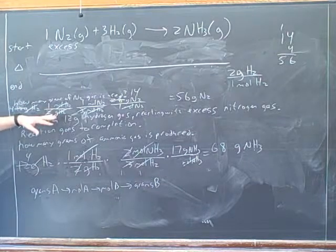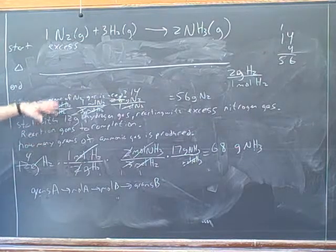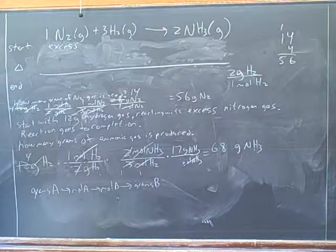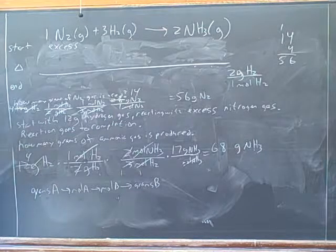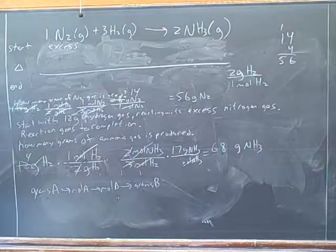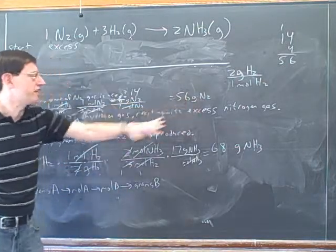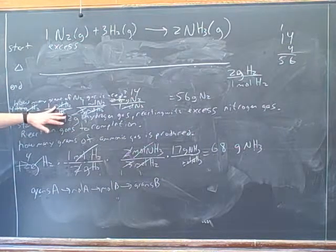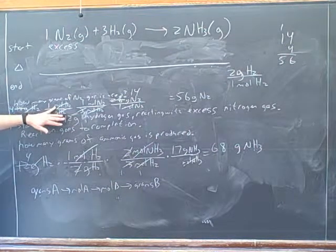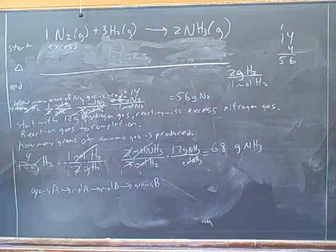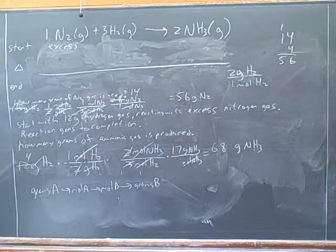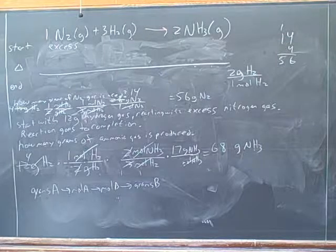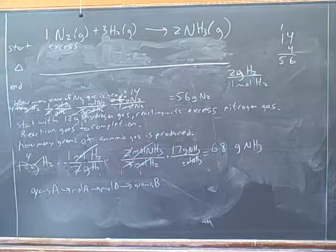First, you write down the units in the conversion ratio. And only then do you put in the numbers for the conversion ratio. Because you don't know where to put the numbers until you put the units in. I'm sorry, what was step three? But they were write down the target units, write down the starting information, write down the conversion ratio. First, you write down the units in the conversion ratio. Then you write down the numbers for the conversion ratio.